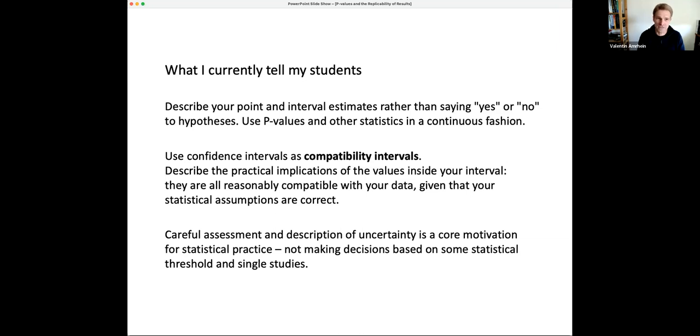So what I currently tell my students is describe what you found. Yes, you can say what your point estimate is, but you should of course interpret above all the interval estimate rather than saying yes or no to hypotheses. You can if you want show me your p-value, but you don't necessarily need to base your final verdict on this p-value, let alone on one threshold. Rather, use confidence intervals as compatibility intervals. I'd like my students to describe the practical implications of all the values inside the interval because they are all reasonably compatible with the data, given that everything that they have in mind about their study, all the statistical assumptions and other assumptions are correct. And after all, careful assessment and description of uncertainty is why we have statistics. I don't think it's making decisions based on some statistical thresholds obtained from single studies.